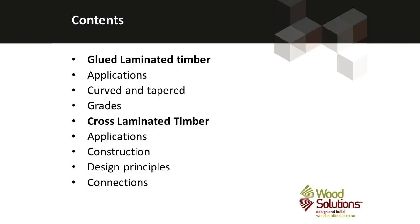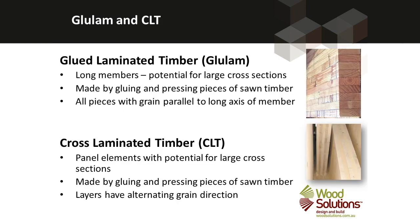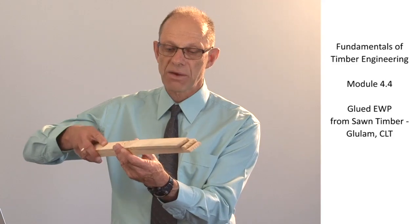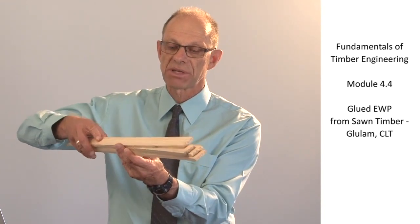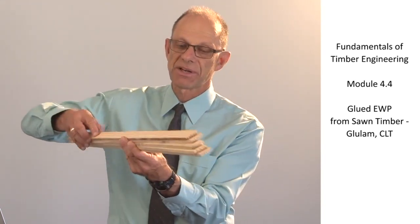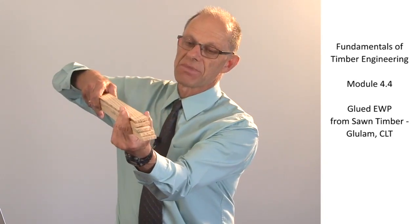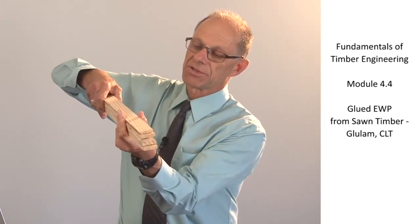In this module we will focus on glued laminated timber and cross laminated timber. Both of these products are manufactured from sawn timber feedstock and we will look particularly at applications and design principles for both of those products. Glued laminated timber is manufactured by gluing together pieces of sawn timber, glued face to face so that their grain is parallel, and that way a large and deep member can be manufactured out of simple sawn timber.